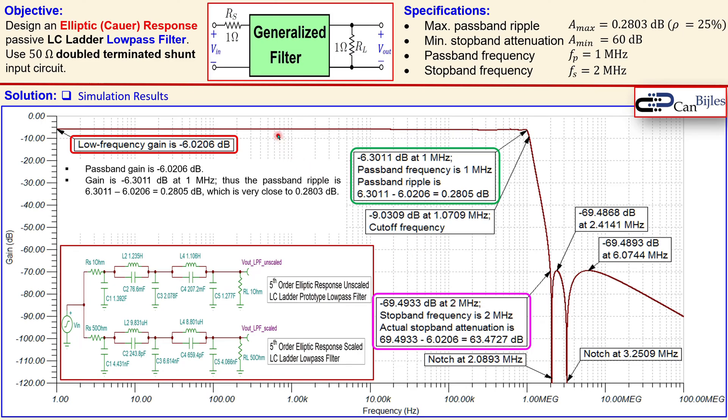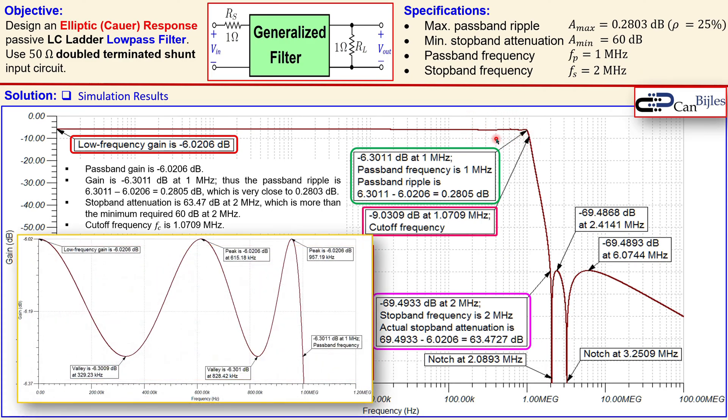Now the stopband edge attenuation, which is then this part, you see the -69.5 dB approximately at 2 megahertz. Again from going from the baseline down all the way here it goes down by 63.47 dB, that is more than the required minimum of 60 dB, so again this is also according to specifications. Now in addition we have some extra information about the cutoff frequency which is not what we have calculated, also not the requirement, but you see here that is also shown here, 1.0709 megahertz.